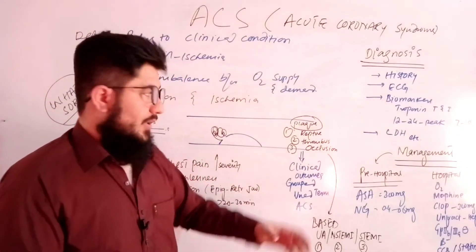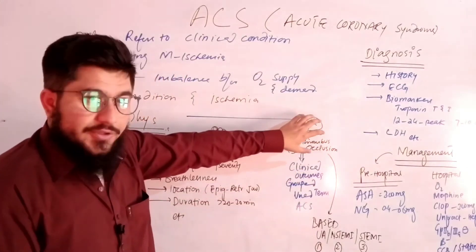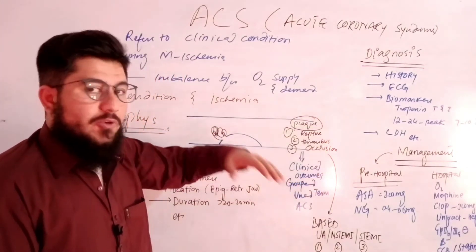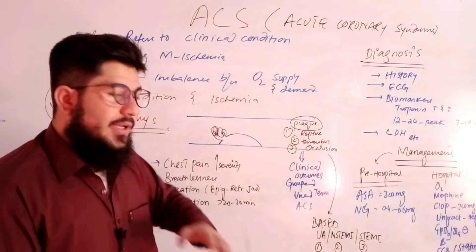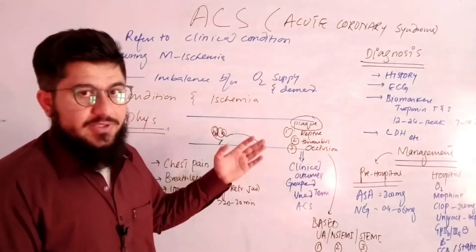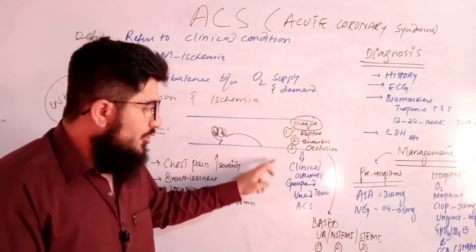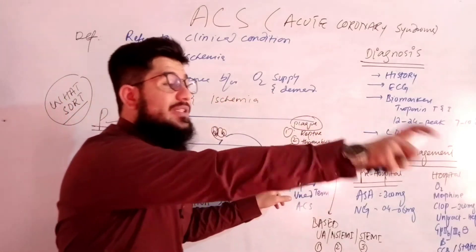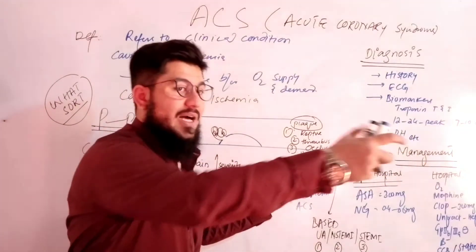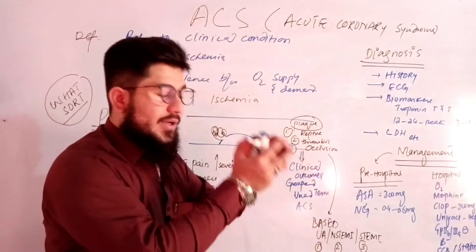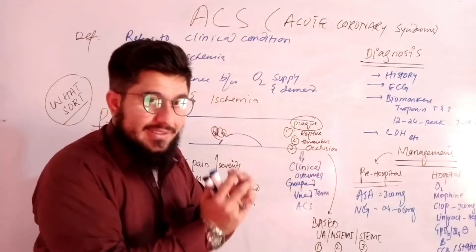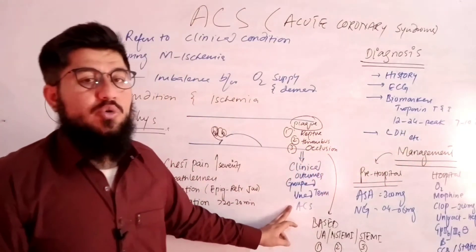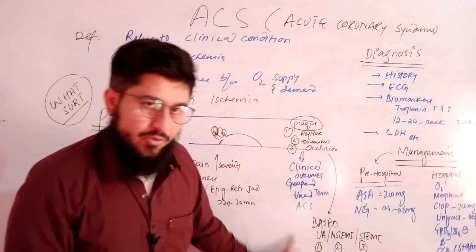So because of plaque rupture, thrombus formation, and occlusion, some clinical outcomes result. Those clinical outcomes are grouped together under a single term — acute coronary syndrome.